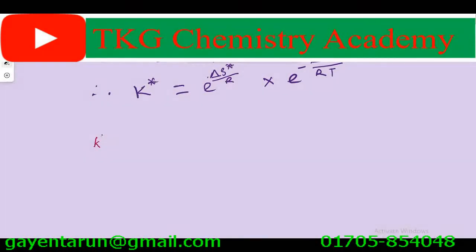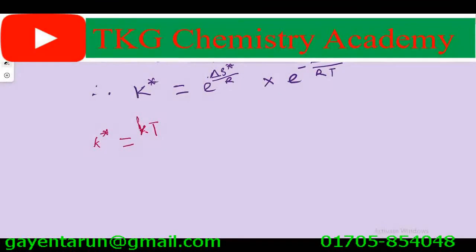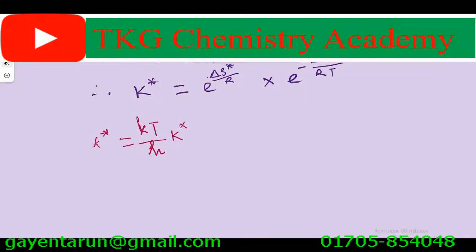K star equal to small k T divided by h, into capital K star. That is: small k star equal to small kT divided by h, into capital K star.